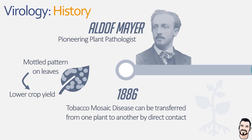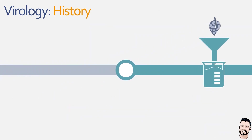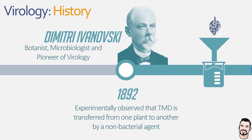Meyer attributed this disease to bacterial microorganisms, as his observations were the same as his fellow colleagues looking into bacterial infections. However, it wasn't until 1892 when Dmitry Ivanovsky performed some experiments that identified the transmission of the tobacco mosaic disease was caused by a non-bacterial agent that was smaller than a bacterium.